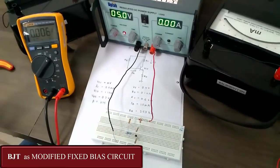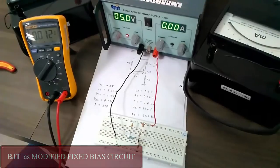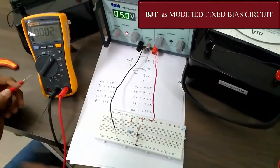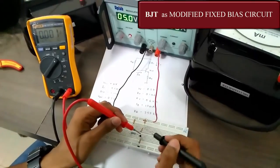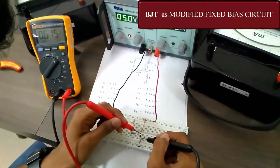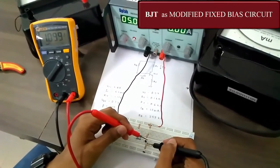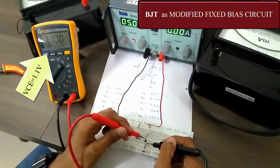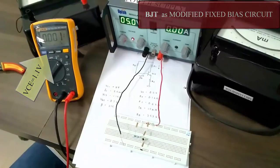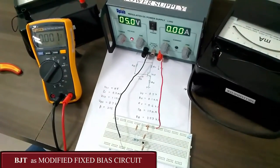The VCE value should be 1.15 volts as we have considered it. For checking VCE, we give the positive multimeter to collector and the negative to emitter. And that gives us 1.1 which is very close to 1.15 volts. So, we can say that the VCE value is correct in terms of designing.